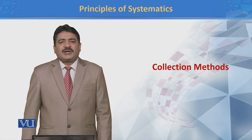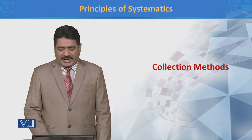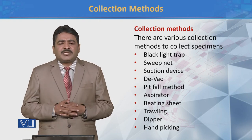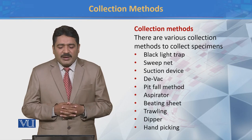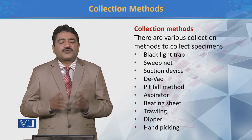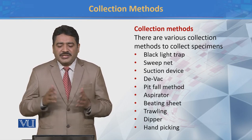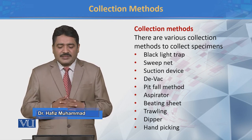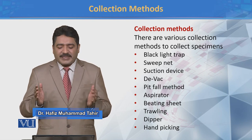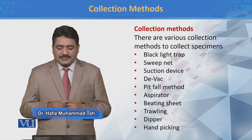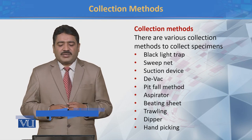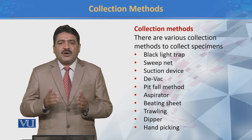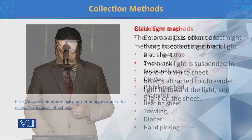In this module we will discuss different collection methods. There are many methods by which we can collect animals, for example: black light trap, sweep net, suction device, D-wag method, pitfall method, aspirator method, beating sheet method, trawling method, deeper method, and hand picking method. Now we will discuss all these methods one by one.